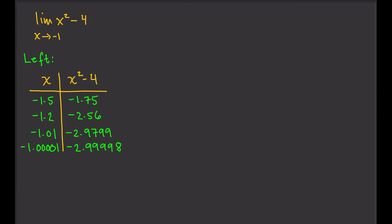Based on the table, we can see that as x approaches negative 1 from the left, the value of x squared minus 4 approaches negative 3. Therefore, the limit of x squared minus 4 as x approaches negative 1 from the left is equal to negative 3.